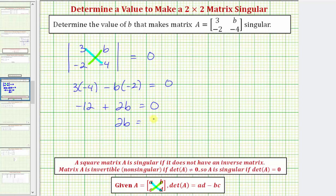Let's go ahead and add twelve to both sides. So we have two b equals twelve. Divide both sides by two. And we have b equals six.